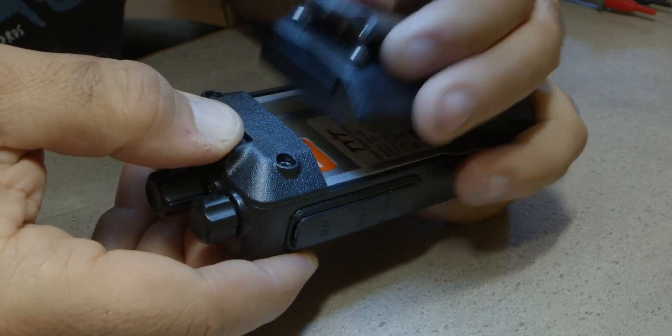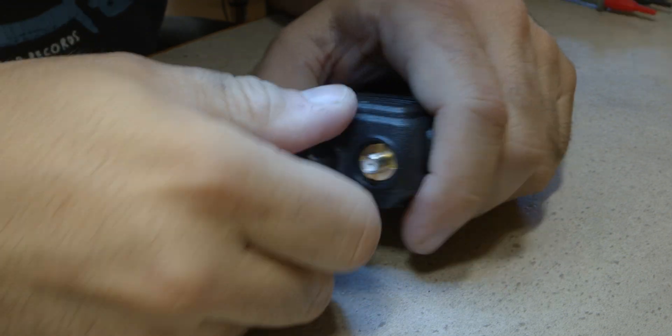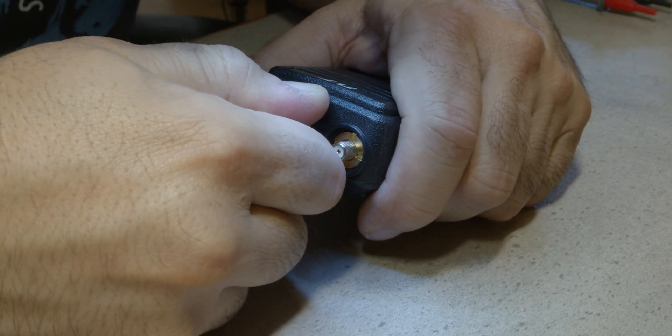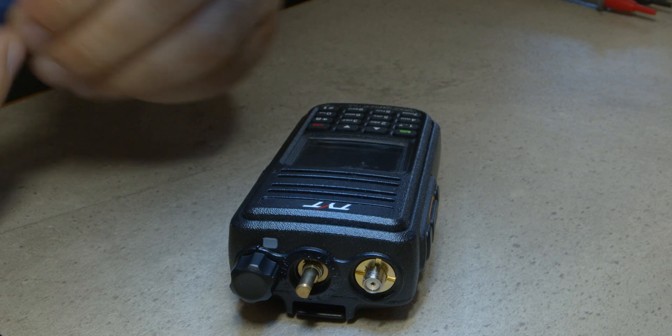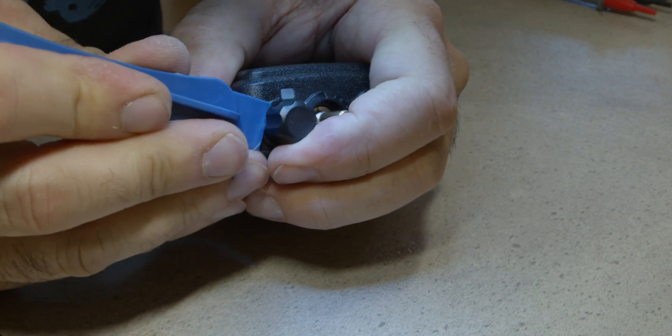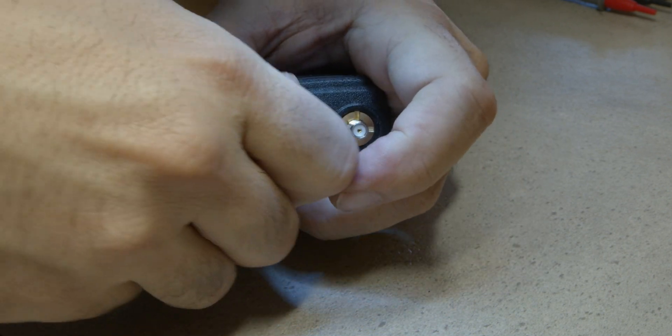So, first we'll need to remove the antenna and the battery. Then we'll pull off the knobs. The volume knob was a little stubborn, so I got a spudger and that immediately nudged it enough for me to remove it by hand.